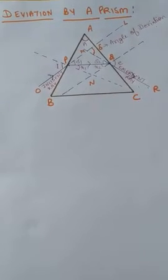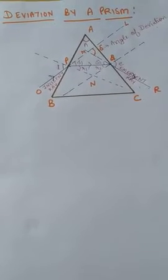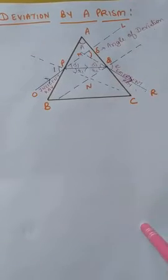In the previous lecture we saw refraction through a glass block, where there was a lateral displacement. Here with a prism there is a deviation taking place. This is the key difference between refraction through a glass block and refraction through a prism.